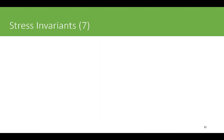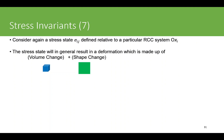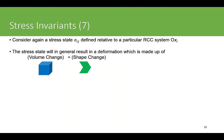Principal stresses appear frequently in post-processing of finite element results. Now consider again a stress state sigma_ij defined relative to a particular rectangular coordinate system O-x_i. The stress state will in general result in a deformation composed of two parts: a volume change and a shape change. One component tries to increase or decrease the volume of the object, and the other distorts its shape.